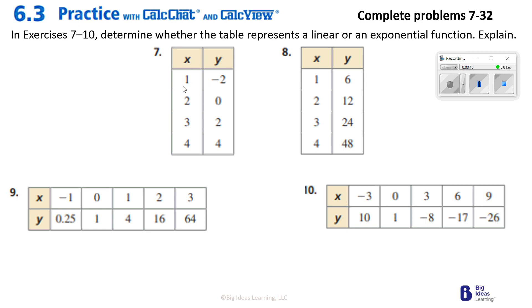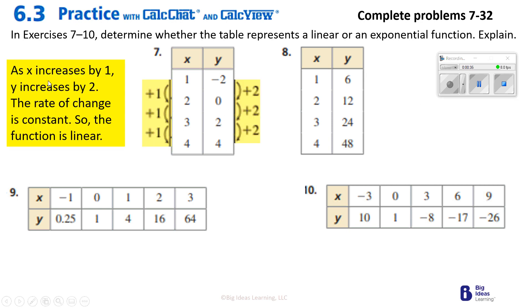As I see over here, everything in the x column is increasing by 1: 1 plus 1 is 2, 2 plus 1 is 3, 3 plus 1 is 4. And everything in the y column is increasing by 2: negative 2 plus 2 is 0, 0 plus 2 is 2, 2 plus 2 is 4. So since x is increasing by 1 and y is increasing by 2, the rate of change is constant, so the function is linear.